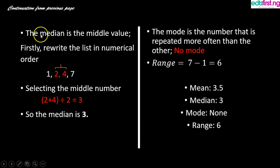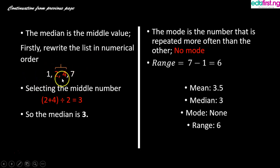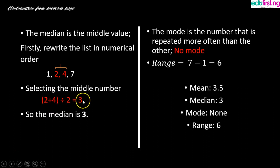To find the median, notice that our count is four, which is even. If you count two from the front and two from the back, no single number remains in the middle. When the count is even, you take the two middle numbers, add them together, and divide by two. The two middle numbers are 2 and 4; adding them gives 6, and 6 divided by 2 gives us 3. So the median is 3.